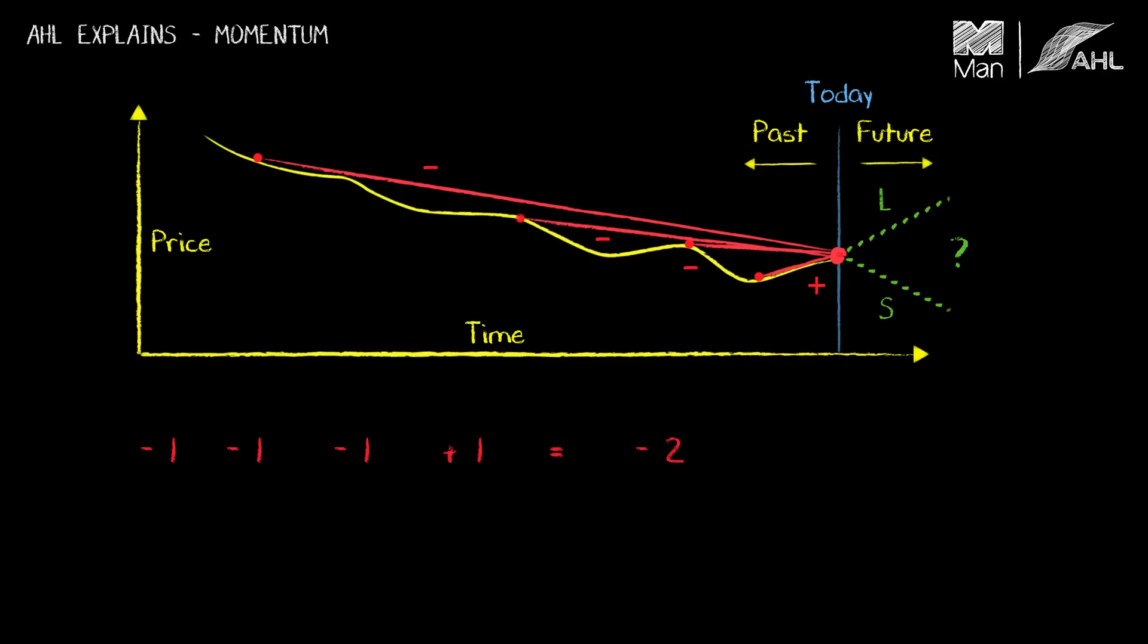Now if the prices had done different things, I might well have ended up with a different final score. For example, if they've been going down consistently over all four regions, then when I've combined them I might have got a score of minus four.